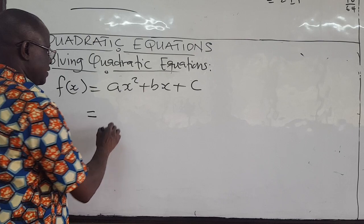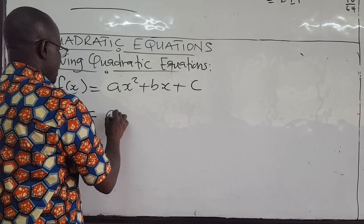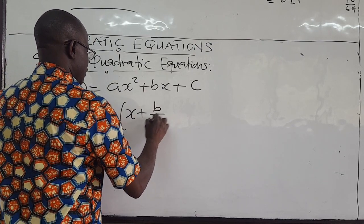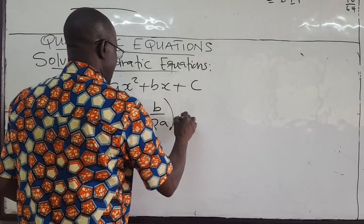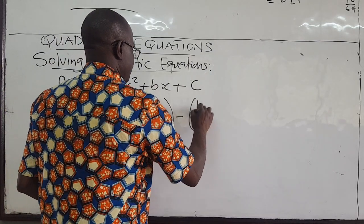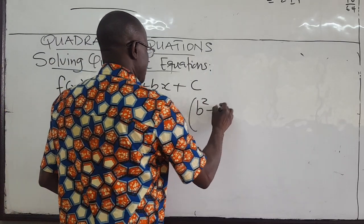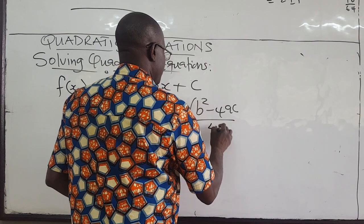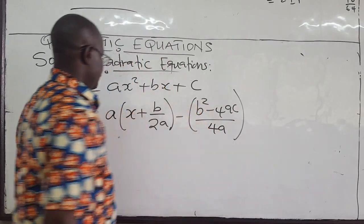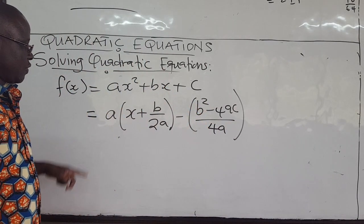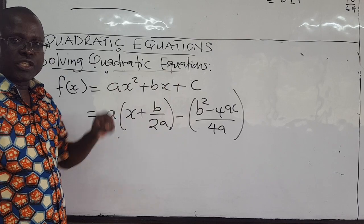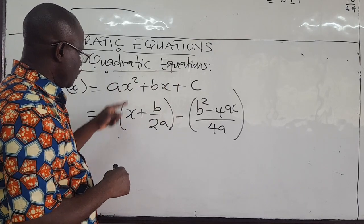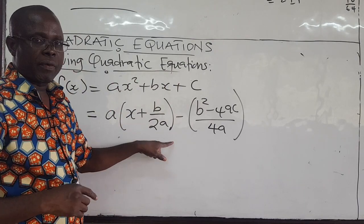Remember, when we factorize this using completion of the square in the previous video, we have a times the quantity (x + b/2a) squared, minus (b² minus 4ac) all over 4a — this is what we got.